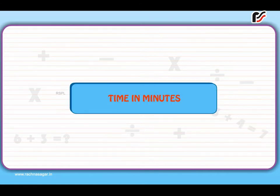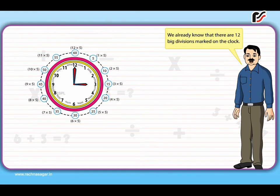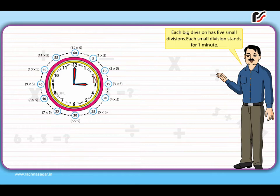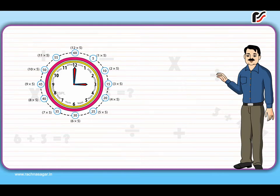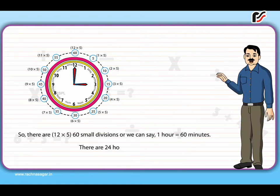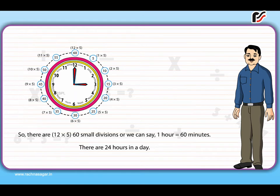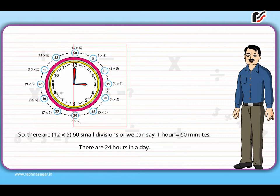Time in minutes: We already know that there are 12 big divisions marked on the clock. Each big division has 5 small divisions, and each small division stands for 1 minute. So there are 12 × 5 = 60 small divisions, or we can say 1 hour equals 60 minutes. There are 24 hours in a day. Remember: the left half of the clock shows the number of minutes to the next hour, and the right half shows the number of minutes past the hour.